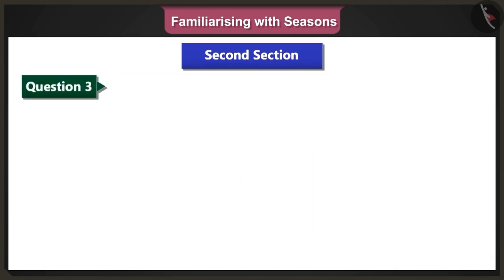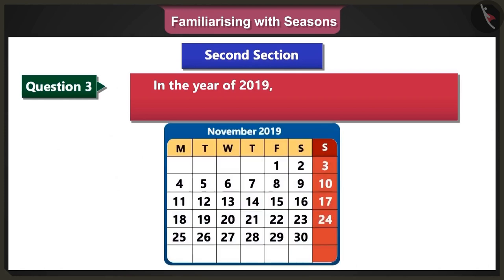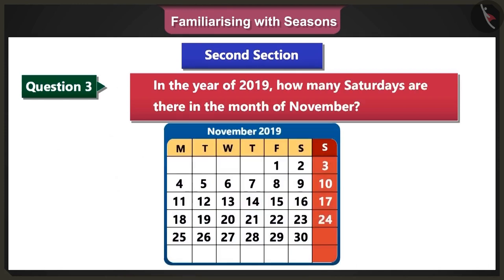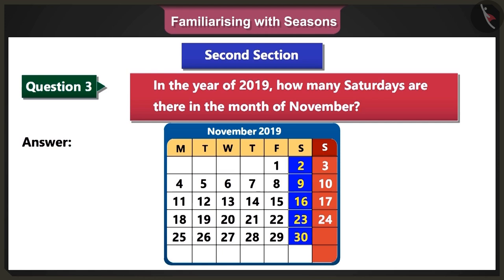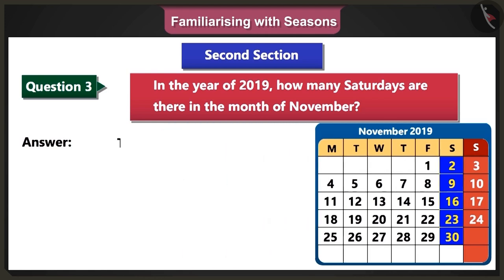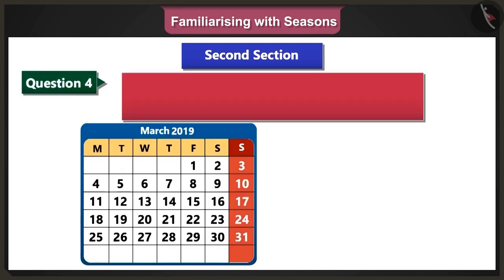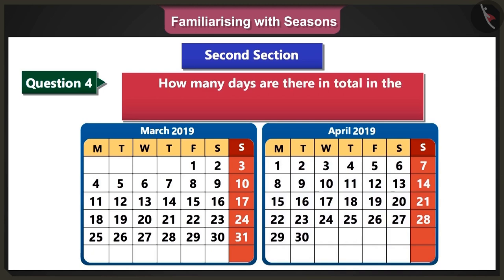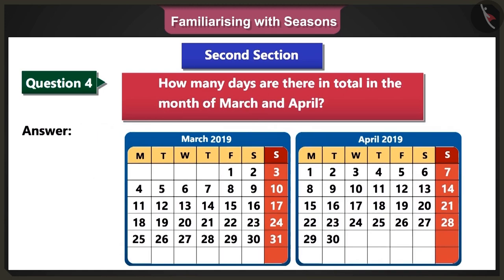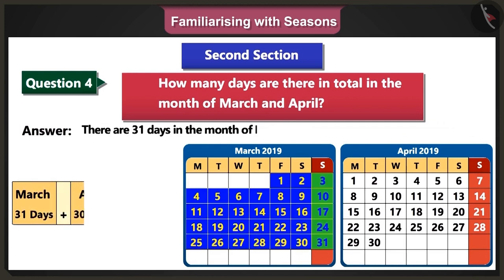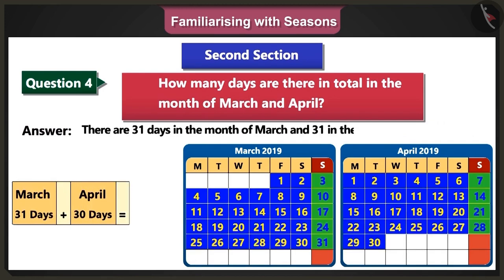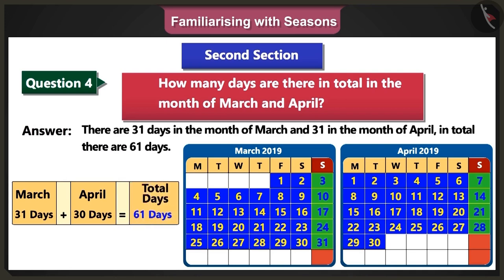Third question: In the year 2019, how many Saturdays are there in the month of November? Answer: In the year 2019, in the month of November, Saturdays come on the 2nd, 9th, 16th, 23rd, and the 30th. Therefore, there are 5 Saturdays in this month. Fourth question: How many days are there in total in the month of March and April? Answer: There are 31 days in the month of March and 30 days in the month of April. When we add both, we get a total of 61 days.